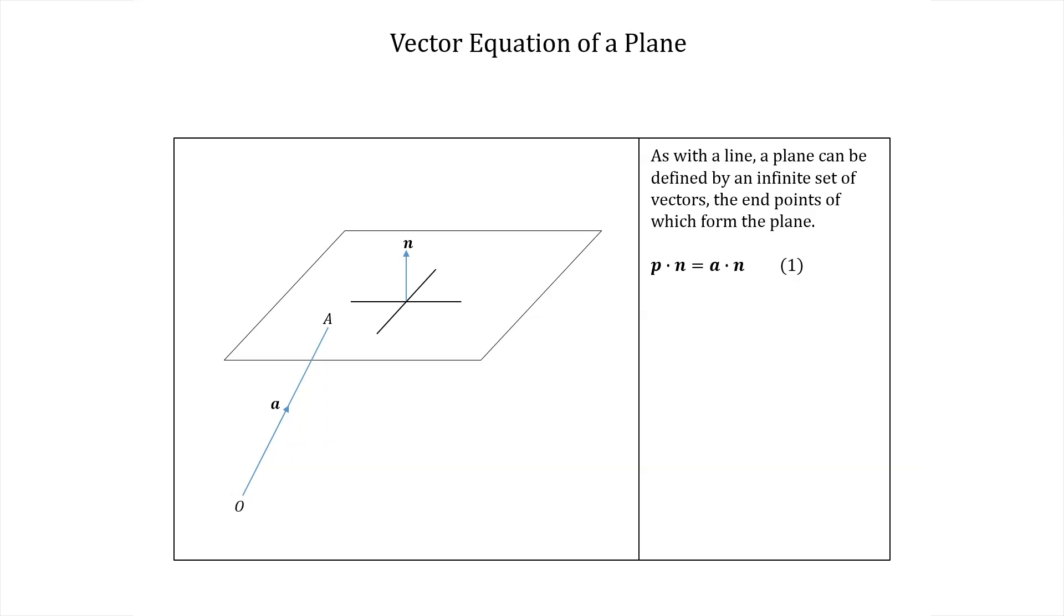How do we show that this is the case? Well, first we need to show that any vector going from the origin to the plane does indeed satisfy equation 1. So say the point P is some point in the plane and lowercase p is the vector from o to P.